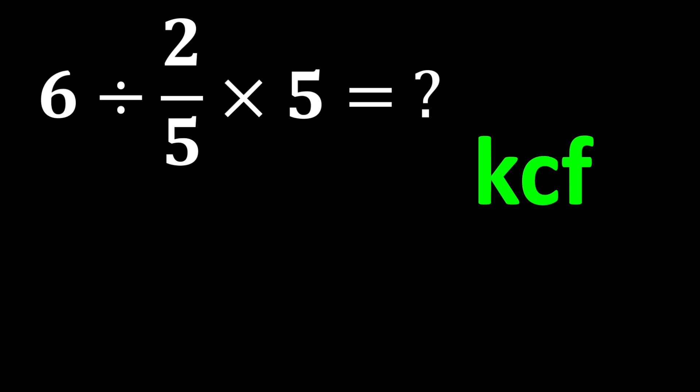K stands for keep, C stands for change, and F stands for flip. Here's how it works. Keep the first number as it is. Change the division sign to multiplication. Flip the second number, take its reciprocal.